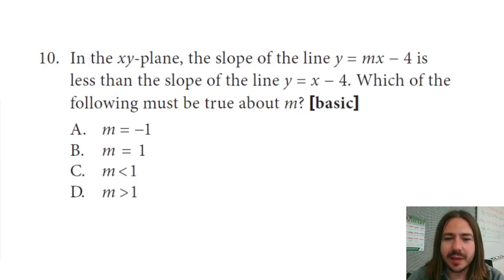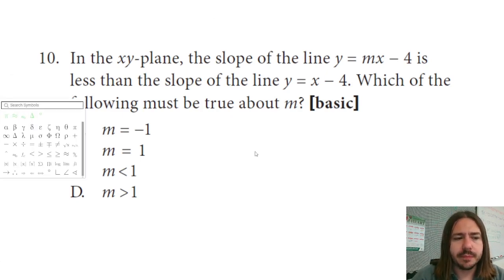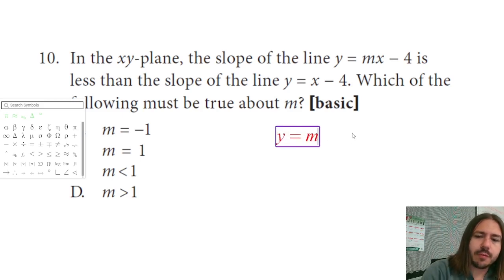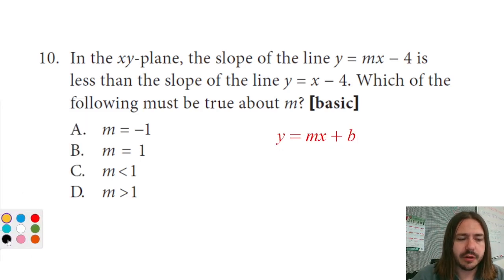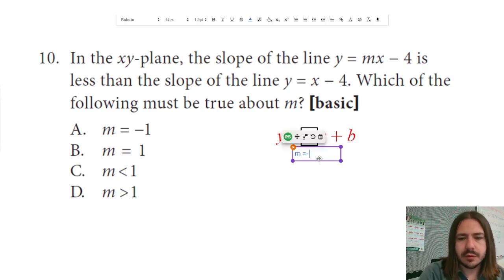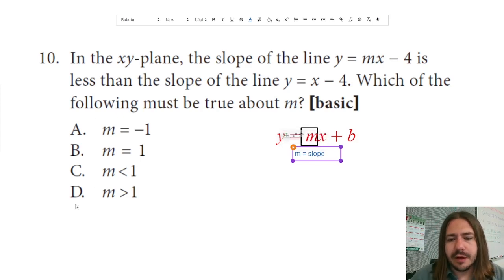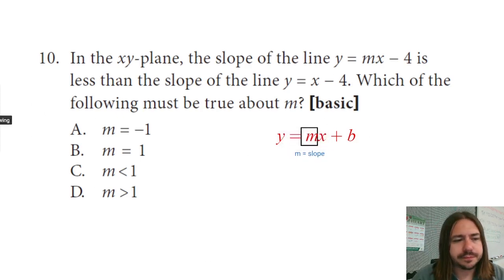Number 10 says in the XY plane, the slope of the line Y equals MX minus 4 is less than the slope of the line Y equals X minus 4. Which of the following must be true about M? Okay. So if you have an equation that's in this format, this MX plus B format, the slope is going to be the number that is the coefficient of X. It's going to be the M. This is the slope. Now for the equation that's given, Y equals X minus 4.